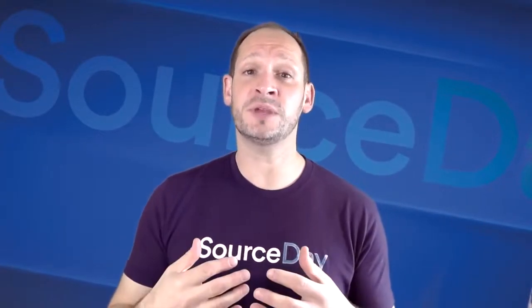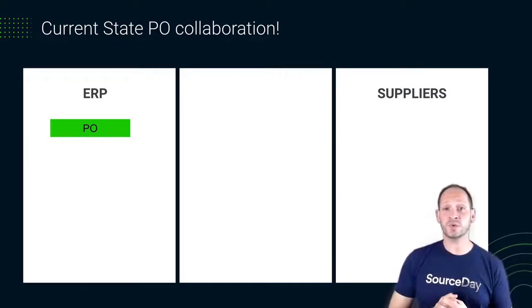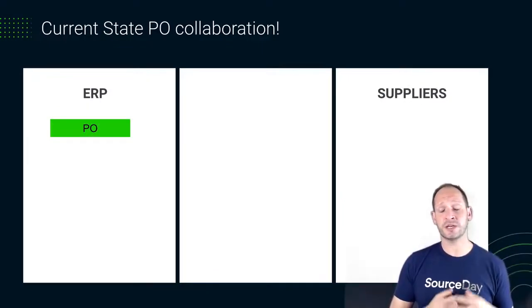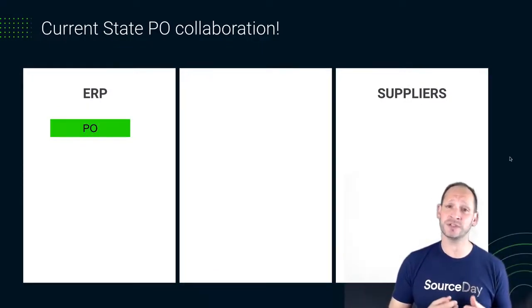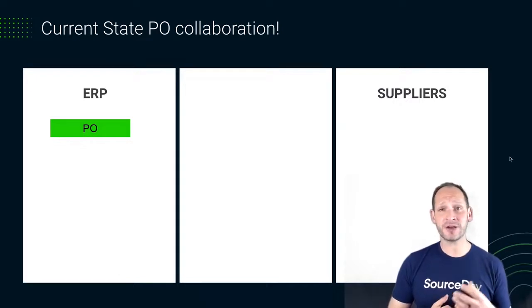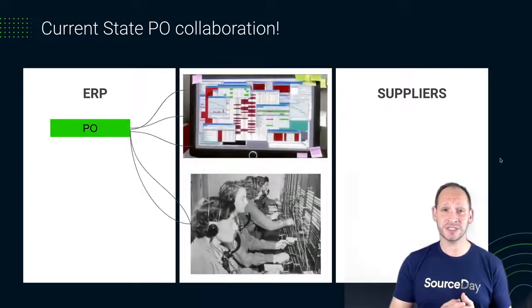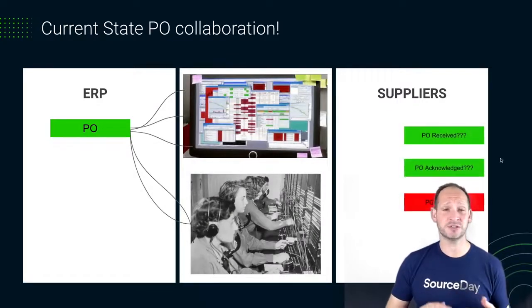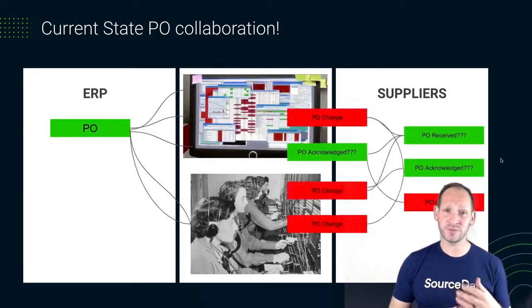To begin, we're going to review the document flow from your ERP to SourceDay. When MRP runs or a PO is created manually, that demand is usually emailed or called into a supplier. The supplier has to provide some type of acknowledgement back, which is usually done the same way — email, spreadsheets, phone calls, or texts. This is where the process of these orders gets lost.